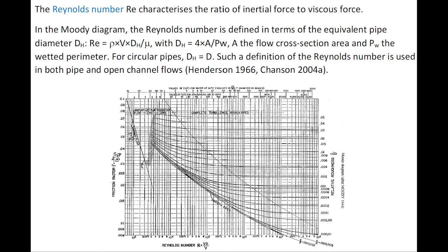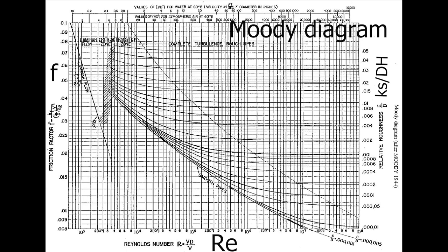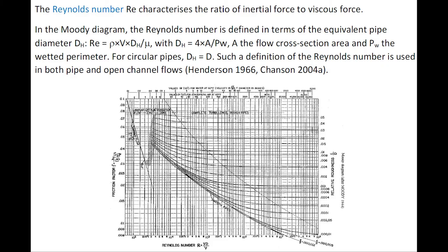The Reynolds number characterizes the ratio of inertial force to viscous force. In the Moody diagram, the Reynolds number is defined in terms of the equivalent pipe diameter dh, equal to 4 times the cross-section area divided by the wetted perimeter. For a circular pipe, of course, the equivalent pipe diameter equals the pipe diameter.